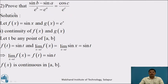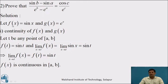Let us consider one more example. Prove that (sin b - sin a) / (e^b - e^a) = cos c / e^c. We can see that the left-hand side ratio resembles the ratio in Cauchy's mean value theorem. The numerator sin b - sin a suggests taking f(x) = sin x, and the denominator with exponentials suggests g(x) = e^x. The points a and b are the endpoints of the closed interval.